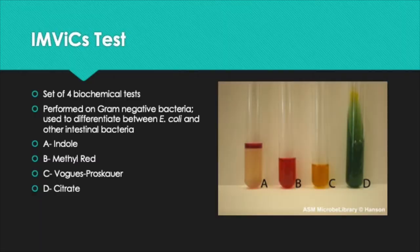Today we are going to be talking about the MVIX test. Each letter in MVIX stands for a test. The MVIX is a set of four biochemical tests and it's four different tubes but it's all one test. The MVIX is done on gram-negative bacteria and it is used to differentiate E. coli from other enteric bacteria — the bacteria found in your gut. We want to find out if our unknown bacteria could be an E. coli.